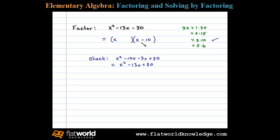Instead of 3 and 10, let's try 2 and 15. We can get negative 13 out of 2 and 15 if the 2 is positive and the 15 is negative. So we can write (x + 2)(x - 15).